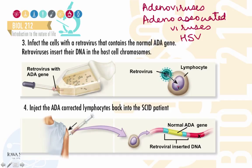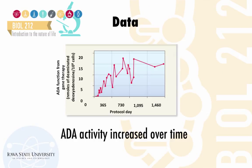The ADA-corrected lymphocytes are injected back into the patient. As you can see in this image, the normal or wild-type ADA gene has inserted into the host genome next to the defective copy and will be able to produce a functional enzyme, thus compensating for the deficiency. The data obtained from this trial indicated that from the day gene therapy was initiated, there was a steady increase in the level of ADA enzyme activity over time.